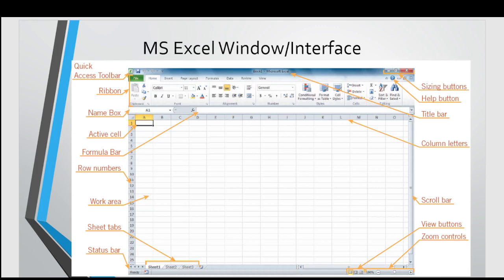Then there is a formula bar in which we write a formula. There are column headings or letters, and there are row numbers.